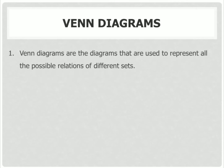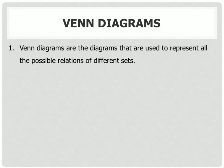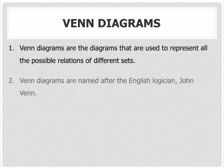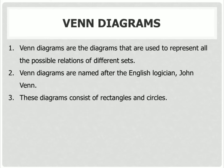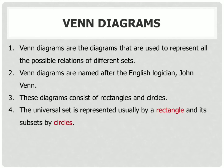Venn Diagrams are the diagrams that are used to represent all the possible relations of different sets. They are named after the English logician John Venn. These diagrams consist of rectangles and circles. The universal set is represented by a rectangle and subsets by circles.